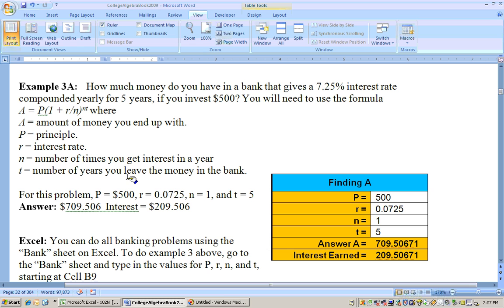Now, for this particular problem up here, it says you invest $500, so that's your principal. Your interest rate is 7.25%, so you need to move your decimal point two places to the left, which would be 0.0725. Since it's compounded yearly or annually, your N would be 1, and you're leaving the money in the bank for 5 years.